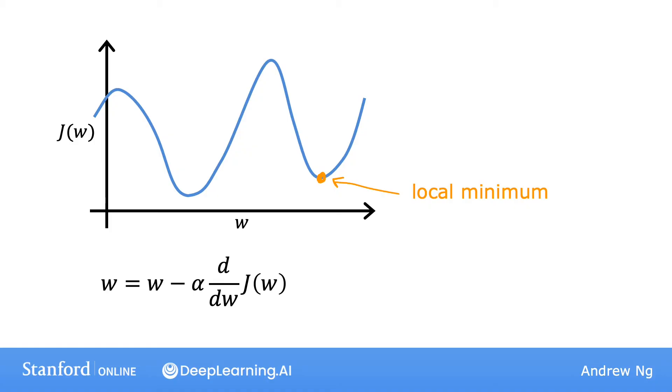Now, let's suppose that after some number of steps of gradient descent, your parameter w is over here, say equal to five. And so this is the current value of w. This means that you're at this point on the cost function j, and that happens to be a local minimum. Turns out, if you draw a tangent to the function at this point, the slope of this line is zero. And thus, the derivative term here is equal to zero for the current value of w. And so your gradient descent update becomes, w is updated to w minus the learning rate times zero, because the derivative term is equal to zero.